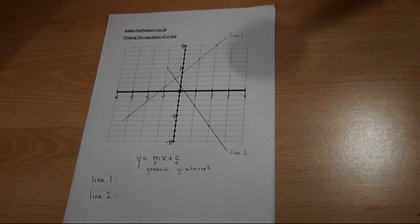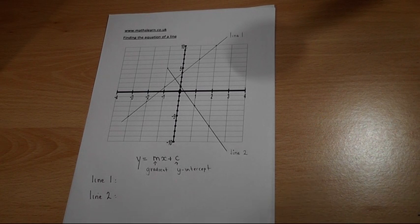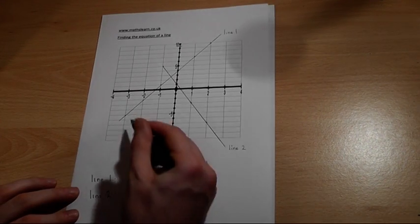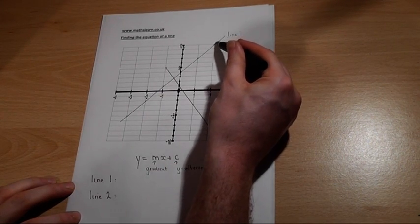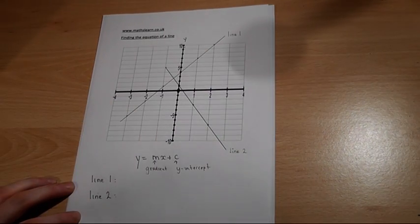This allows us to find quite easily the equation of a line. So if we look at line one, its y-intercept is where it cuts the y-axis. This is the y-axis.